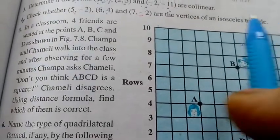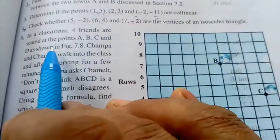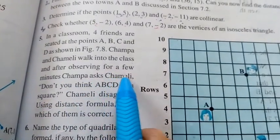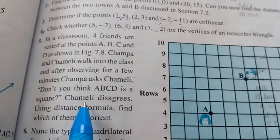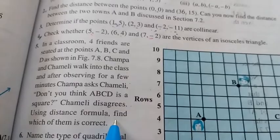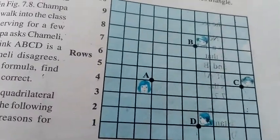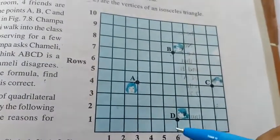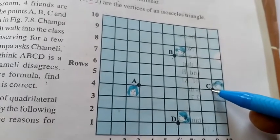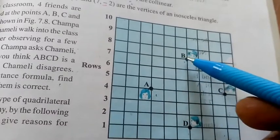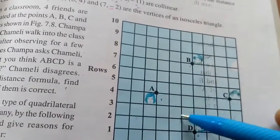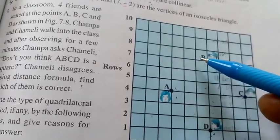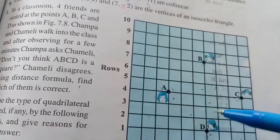Question number 5: in a classroom, 4 friends are seated at points A, B, C, and D. Champa asks Chameli whether ABCD is a square. Using the distance formula, we take coordinates: A(3,4), B(6,7), C(9,4), D(6,1). We find distances AB, BC, CD, and DA. If all 4 sides are equal and the diagonals BD and AC are also equal, then ABCD is a square. If sides are equal but diagonals are not, it is a rhombus.